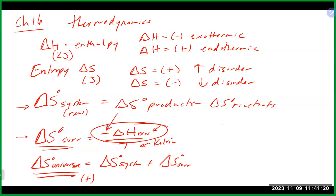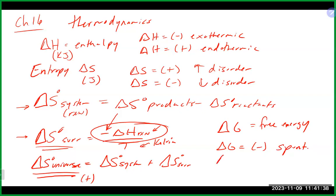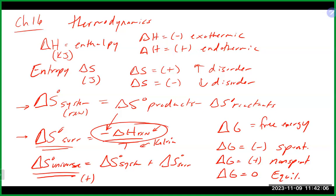We also talked about Gibbs free energy, which is delta G — that is energy available to do some type of work. If delta G is negative, the reaction is spontaneous. If delta G is positive, it's non-spontaneous. If delta G equals zero, you're at equilibrium. Similarly, if delta S of the universe equals zero, it's also an equilibrium process, meaning the forward and reverse reactions occur at the same rate and there's no net change.